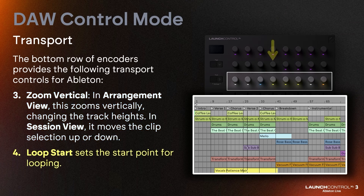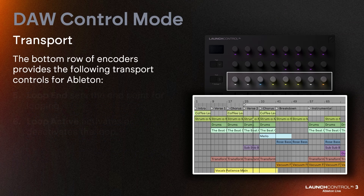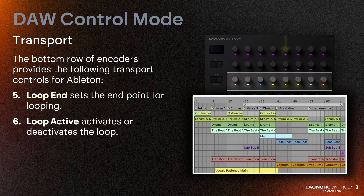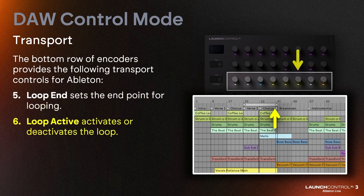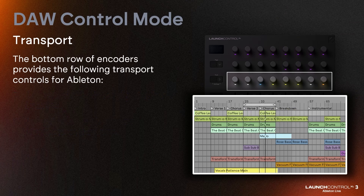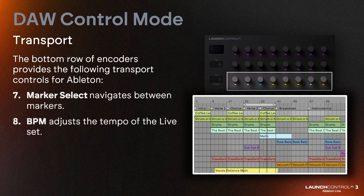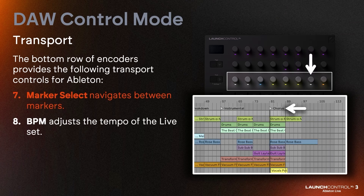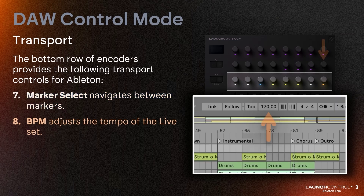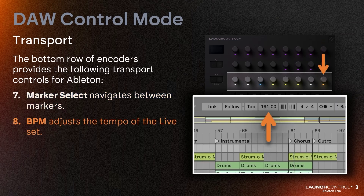Loop start sets the start point for looping. Loop end sets the end point for looping. Loop active activates or deactivates the loop. Marker select navigates between markers, and BPM adjusts the tempo of the live set.